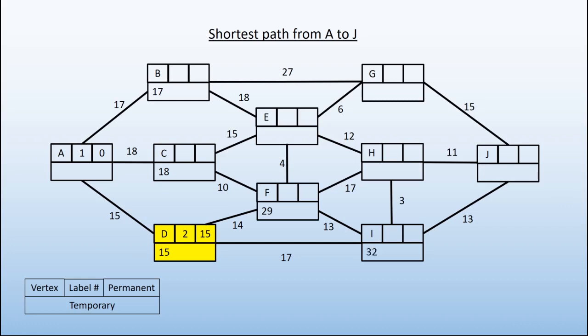Similarly, we can get to I in 32. That is the 15 plus the 17 to get to I. So at the moment what we're saying is that the shortest distance that we know we can get to I in is 32. There are lots of ways of getting there in more, but certainly we can get there in 32. That's the smallest that we know about at the moment.